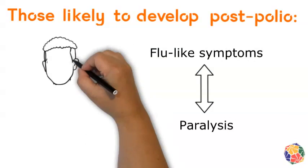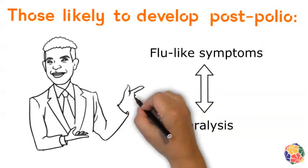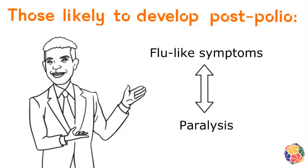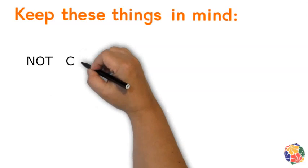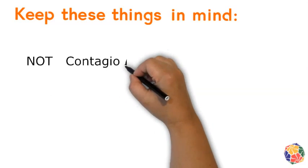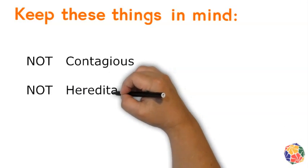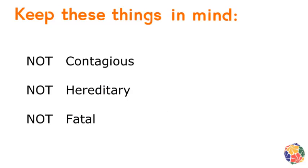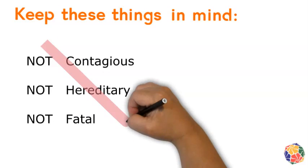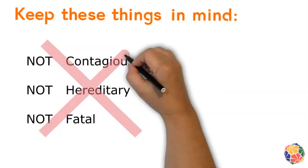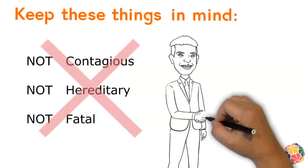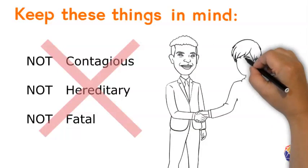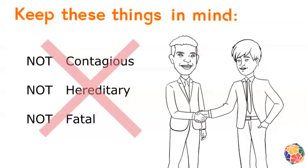Even those who did not develop paralysis or weakness can develop post-polio conditions. It is important to note that post-polio conditions are not contagious, are not passed down in a hereditary way, and they are not a condition that causes death. This means that caring for persons who have post-polio conditions does not put the carer at risk, and the children of those exposed to polio do not develop these conditions from their parents.